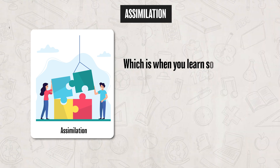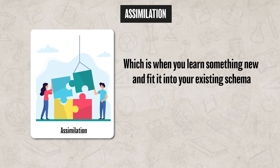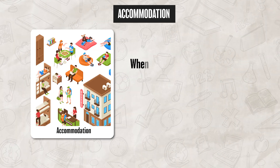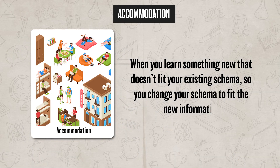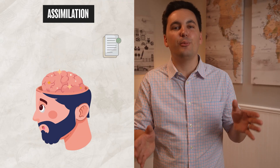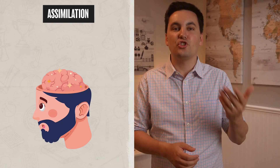Over time, we can see that our schemas change, and this generally happens in two ways. The first being assimilation, which is when you learn something new and fit it into your existing schema. Assimilation does not change the schema; instead, it just incorporates the new information into the existing schema. The second way is through accommodation, which is when you learn something new that doesn't quite fit your existing schema, so you change your schema to fit the new information. Just remember: assimilation is when new information is incorporated into the schema without changing it, and accommodation is when you change your thinking and schema to fit the new information.